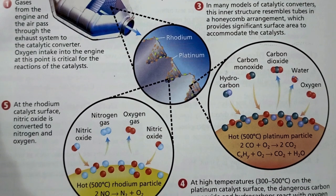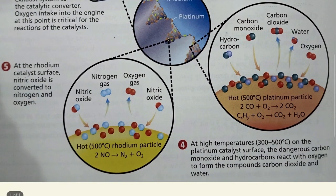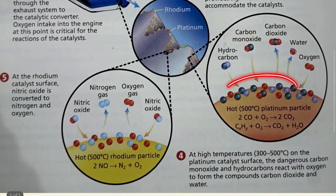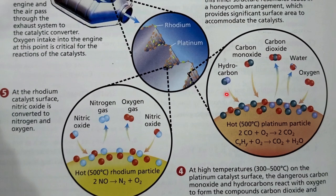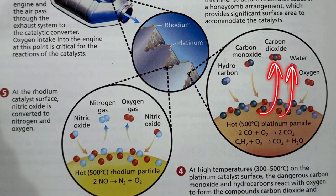What do these rhodium and platinum particles do? As you can see here, carbon monoxide — the pollution-causing substance — mixes with oxygen and is converted into carbon dioxide, which is less poisonous. Similarly, other unburned hydrocarbons are mixed with oxygen and converted into carbon dioxide plus water. This process takes place on the surface of the platinum particle, where hydrocarbons and carbon monoxide enter the surface and are converted into carbon dioxide and water.